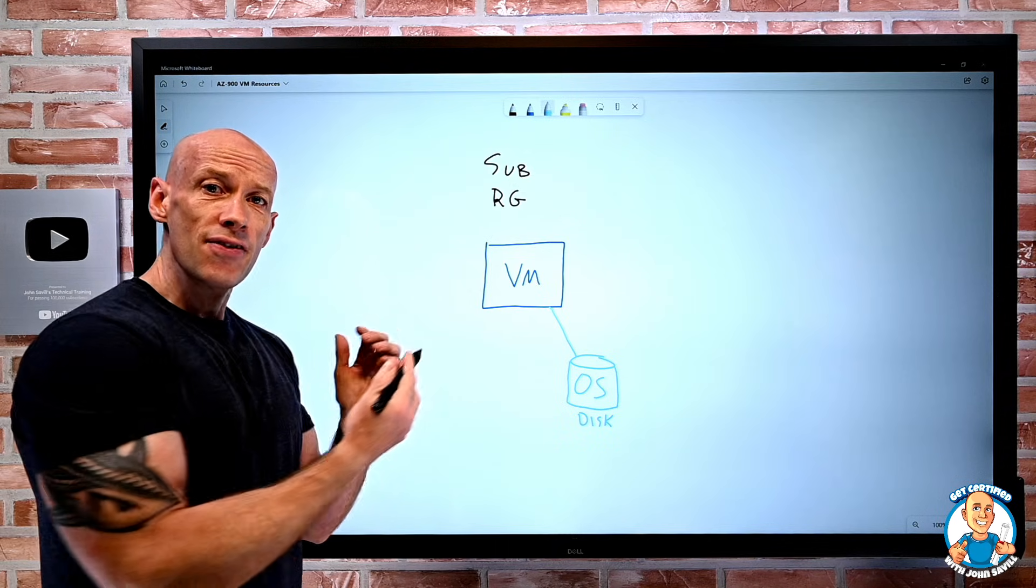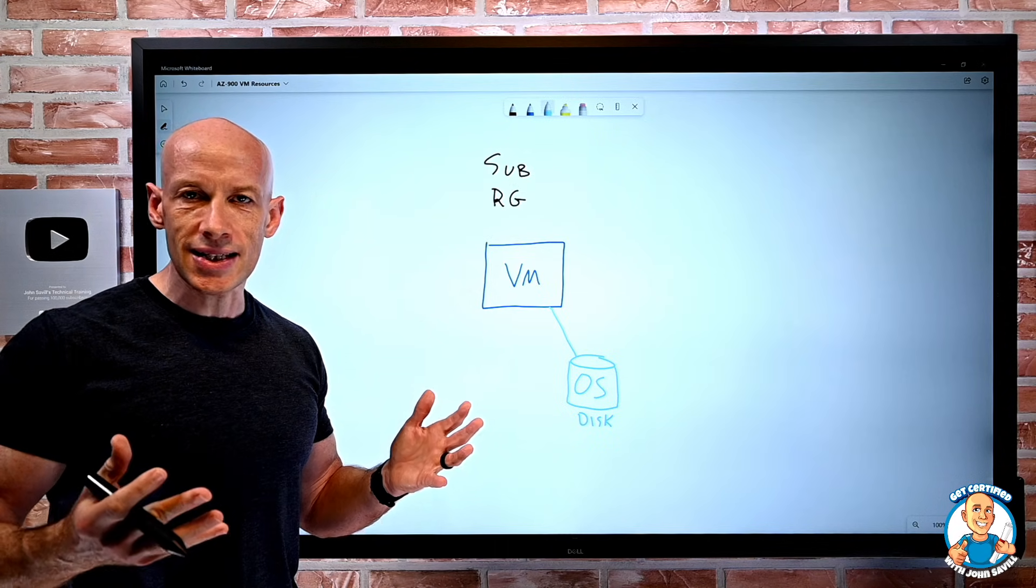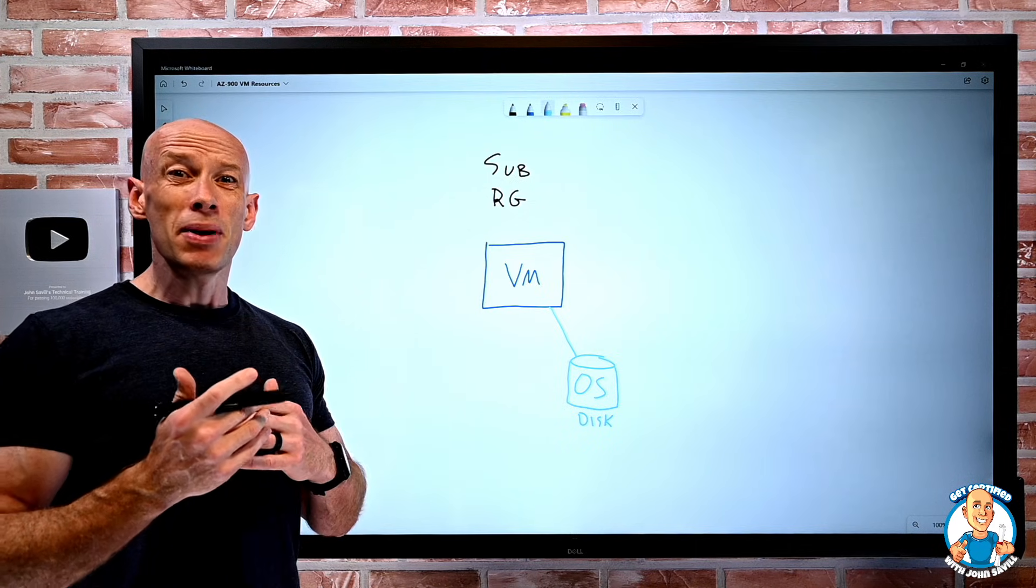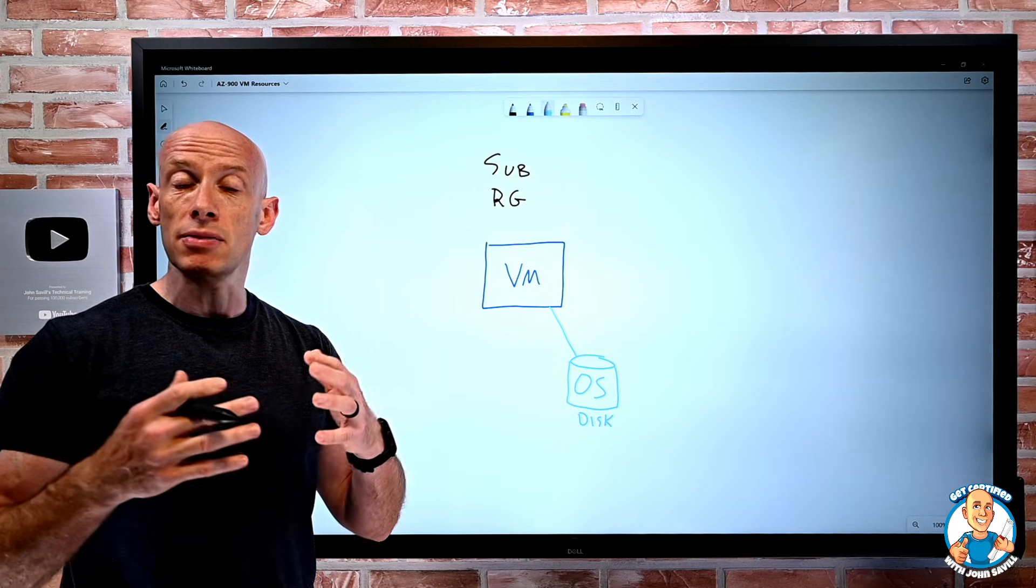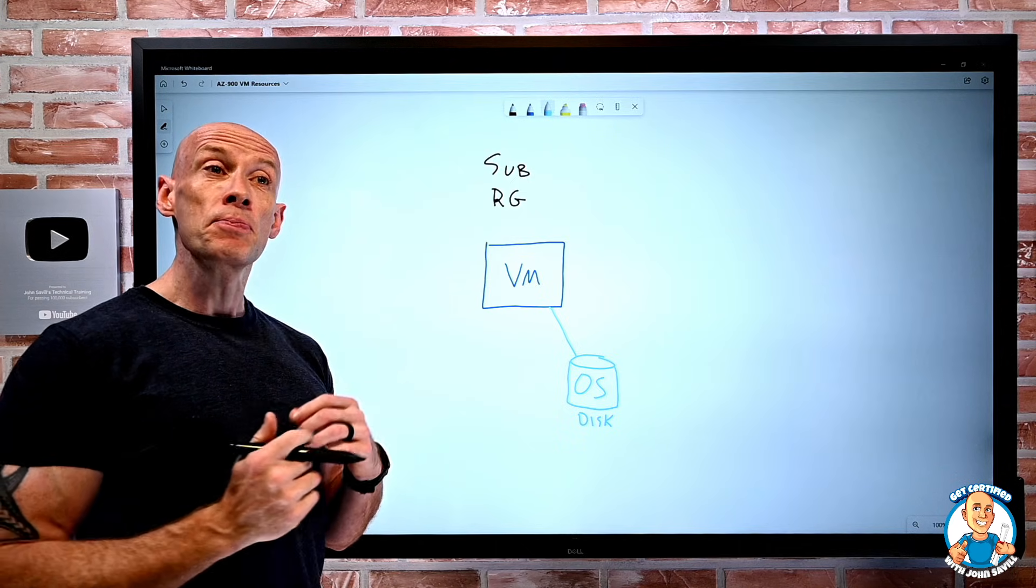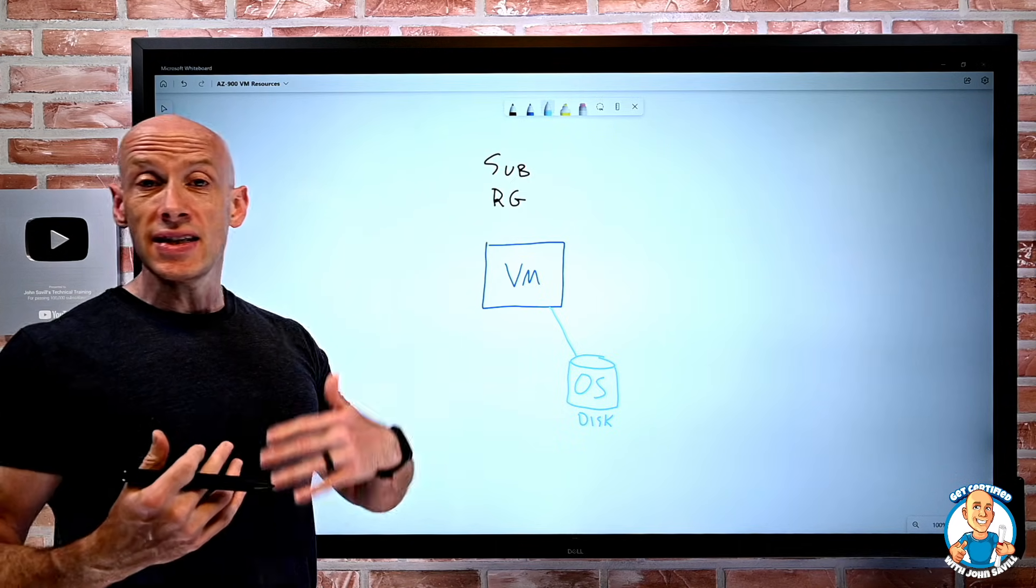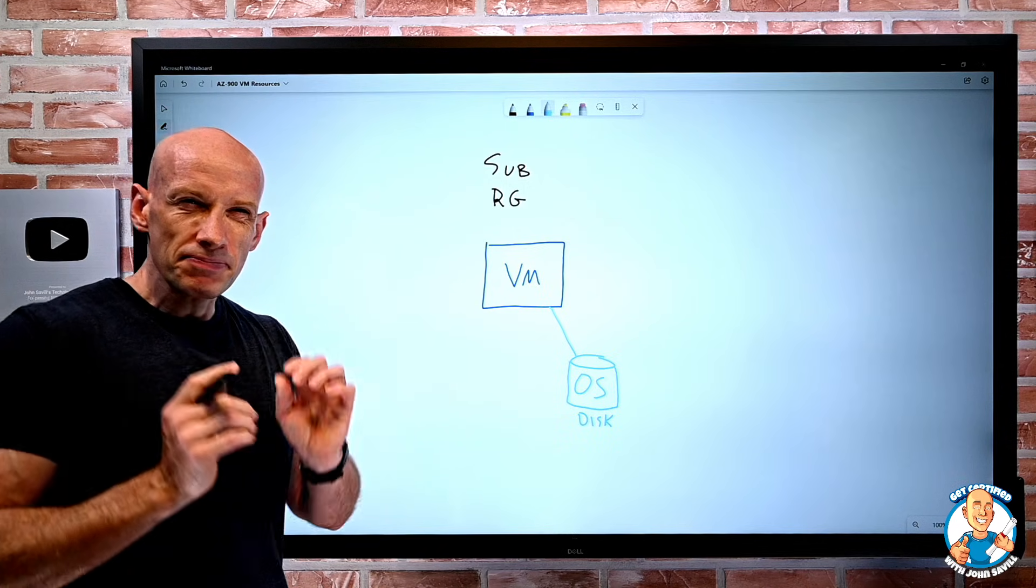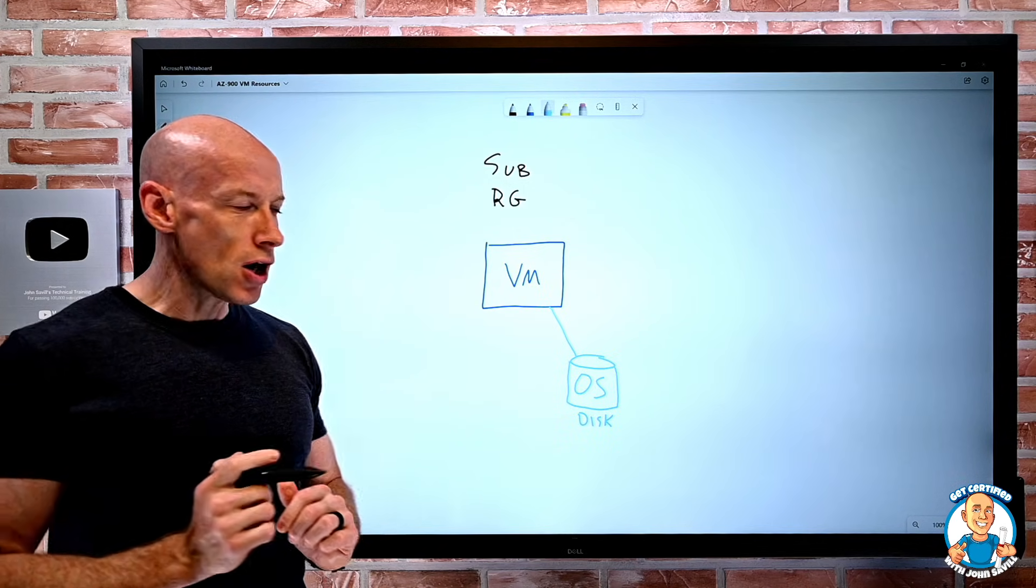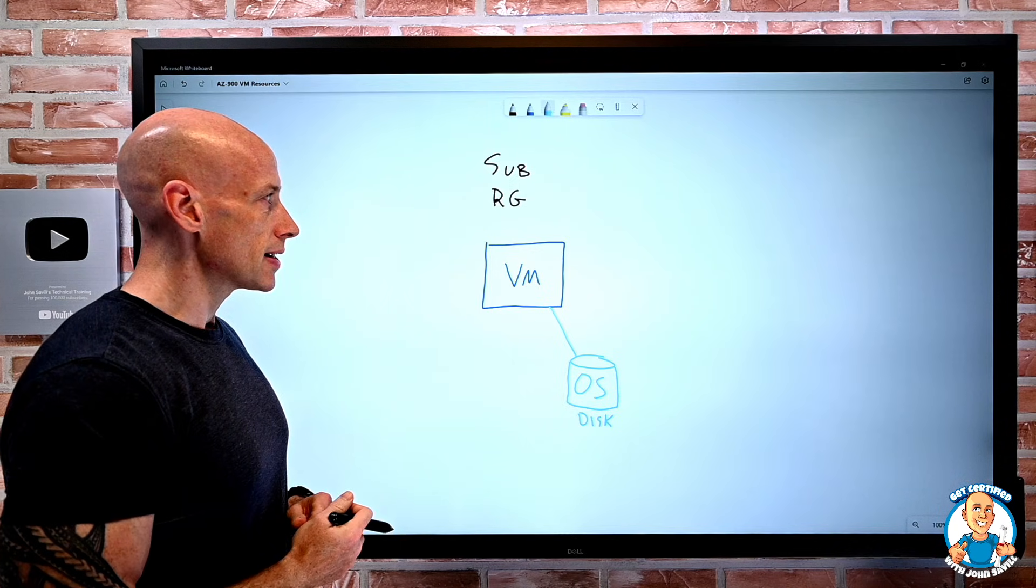Realize the downside of that is if I deallocate and stop paying for the VM, I lose all of that state of the operating system. But if it is something that isn't stateful, maybe an AKS worker node or part of a VM scale set, I don't care about the operating system disk state, and it can just get recreated every time it starts, then that ephemeral disk might be okay. For a regular VM though, we're going to have a managed disk that hosts the operating system.